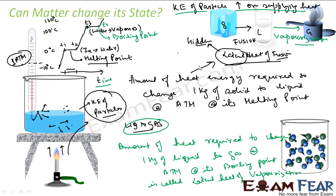So we have learned several key terms: fusion — that is conversion of solid to liquid; vaporization — that is conversion of liquid to gas; latent heat of fusion — amount of energy required to convert 1 kg of solid to liquid at atmospheric pressure at its melting point; and latent heat of vaporization — amount of heat required to change 1 kg of liquid to gas at atmospheric pressure at its boiling point.